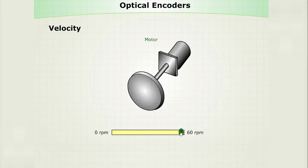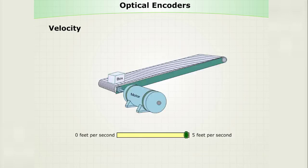Let's adjust the velocity of this motor. You can see how adjusting the velocity of the motor affects the velocity of the conveyor belt.